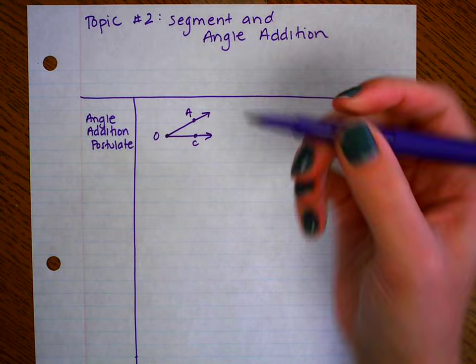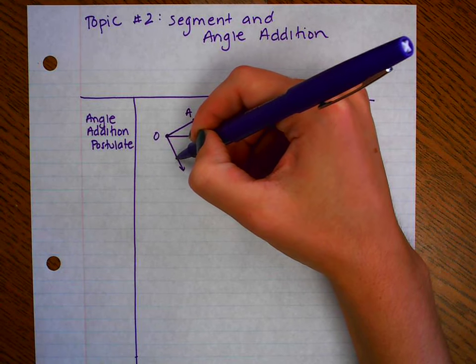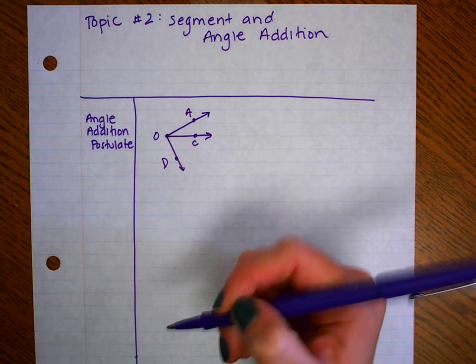And sometimes we have another angle, an adjacent angle, so I'm going to draw on another ray. I'm going to call this point D. And now I have two adjacent angles.